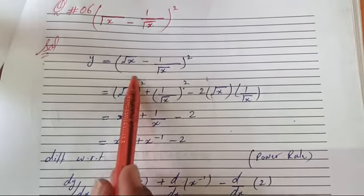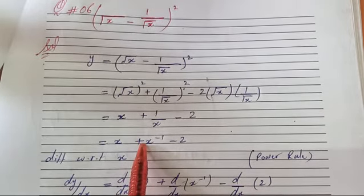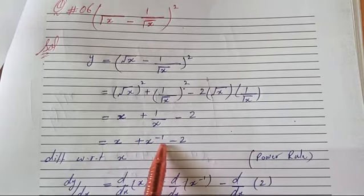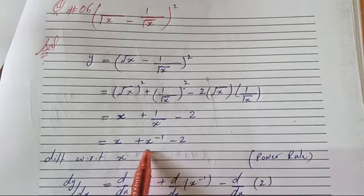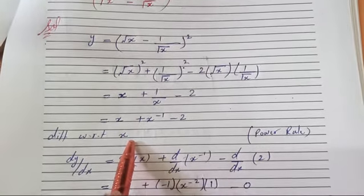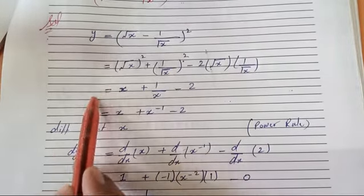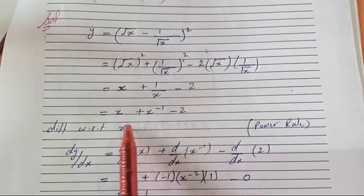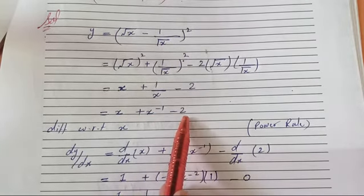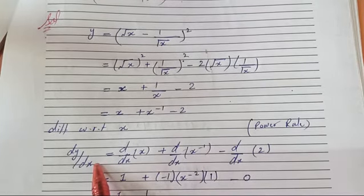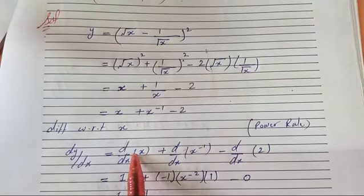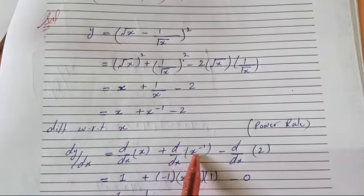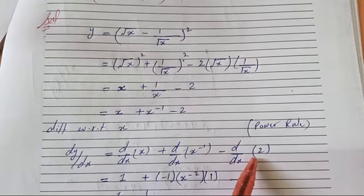Now differentiate. We have simplified the given expression. After simplification, use the power rule. Write the derivative on both sides: dy/dx on the left-hand side, and d/dx of (x + x^(-1) - 2) on the right-hand side. Since the derivative is a linear function, it can operate on all terms separately. So write: d/dx of x, plus d/dx of x^(-1), minus d/dx of 2.